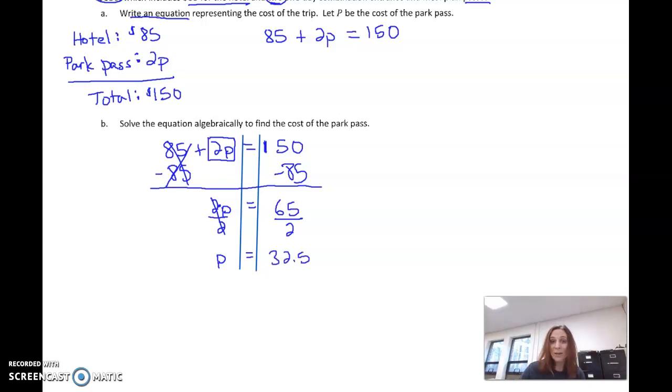65 divided by 2 is 32.5. We know we're talking about money, though—cost of a park pass—so I'm going to write it as $32.50. These steps are going to stay the same anytime we have a two-step equation. In fact, they're going to stay the same for any equation. We're just going to keep adding more steps in front of it.